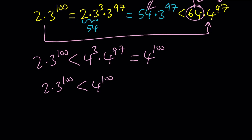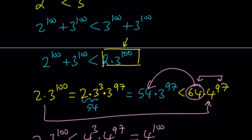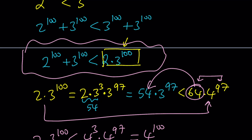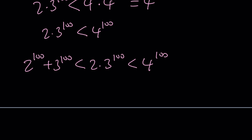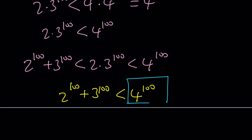That's what we wanted to get. Notice that 2 to the power 100 plus 3 to the power 100 is already less than 2 times 3 to the power 100. So putting these two together, we have 2 to the power 100 plus 3 to the power 100 is less than 2 times 3 to the power 100, which is less than 4 to the power 100. Therefore the larger number — the winner — is 4 to the power 100.